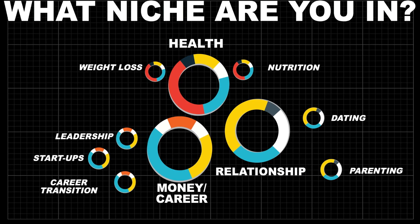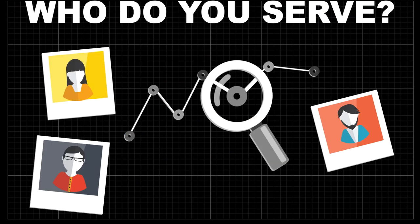If you're in the health market, you might be in weight loss, helping people lose weight, or just helping people with nutrition. Or in the money and career field, you might teach leadership. You've got to figure out exactly what niche you're in — dive deeper. Then figure out who it is you serve. For example, if you're a weight loss coach in the health market, you help single parent entrepreneurs lose weight so they can feel good, look good, and crush it in their business. That's more compelling to a specific type of person — you want to serve one person.